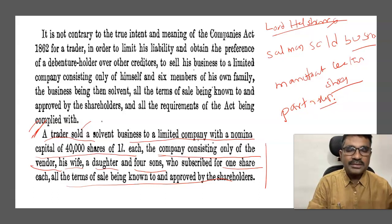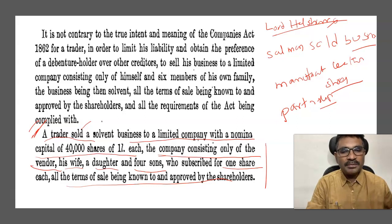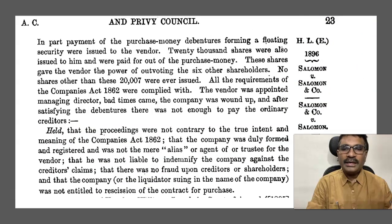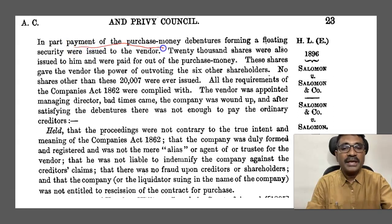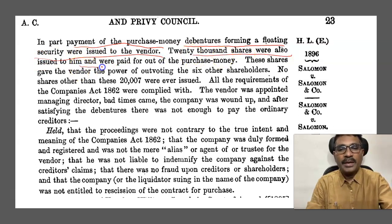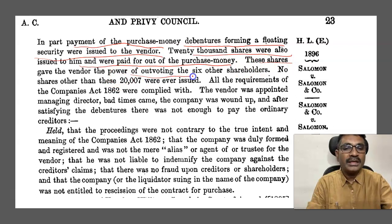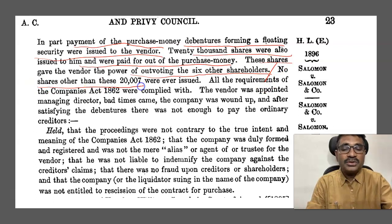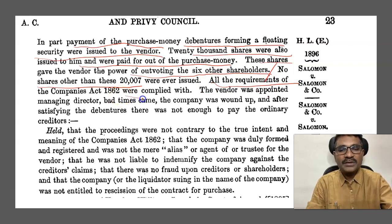The partnership firm business which was running was converted into a company. In part payment of the purchase money, debentures forming a floating security were issued to the vendor. 20,000 shares were also issued to him and paid for out of the purchase money. These shares gave the vendor the power of outvoting the six shareholders. No shares other than these 20,007 shares were issued. All the requirements of the Companies Act were fulfilled.